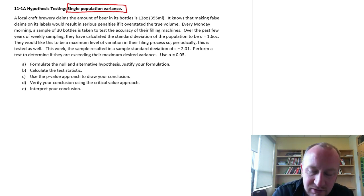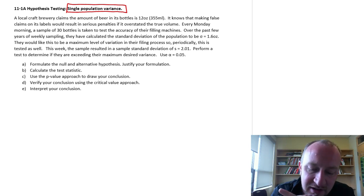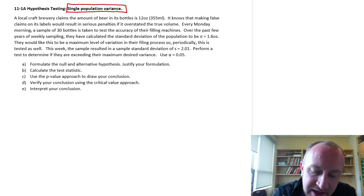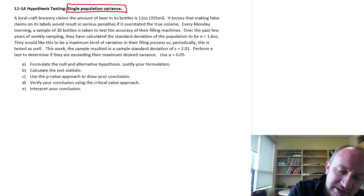So let's just read through the problem and we'll address issues as they arise. So here we're looking at a craft brewery that claims the amount of beer in its bottles is 12 ounces and knows that making false statements on its labels would result in serious penalties if it overstated the volume. Every Monday morning a sample of 30 bottles is taken to test the accuracy of the machines. Over the past few years of sampling they've calculated the population standard deviation is 1.6 ounces.